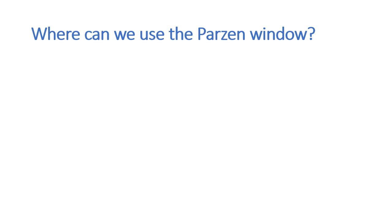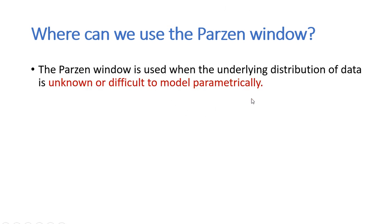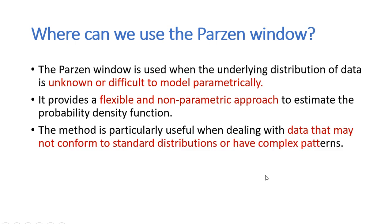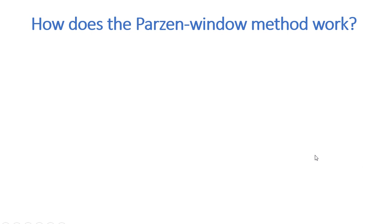Parzen Window is used whenever you have no idea about the underlying distribution of data, or whenever the data is difficult to be modeled parametrically. Therefore, Parzen Window is able to provide a more flexible and non-parametric approach to estimate the probability density function. This method is very good when you are dealing with data that does not have any kind of standard distribution or has very complex patterns. Parzen Window is very useful when the data is not following any kind of standard distributions, or maybe the patterns are very complex.